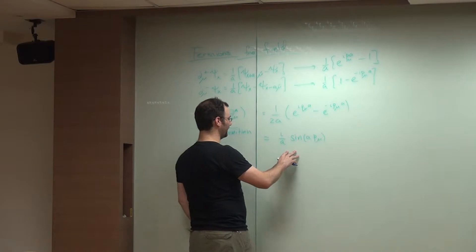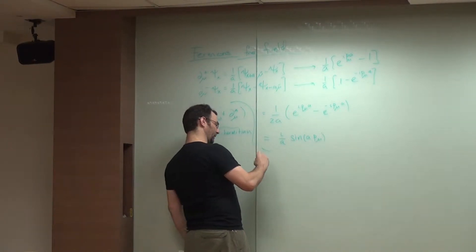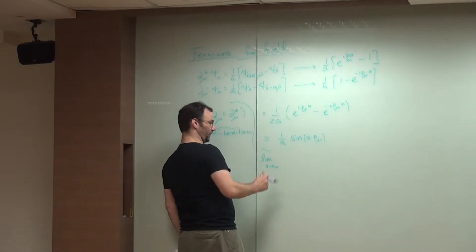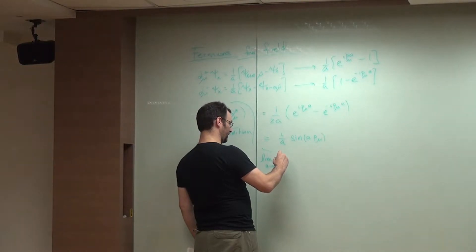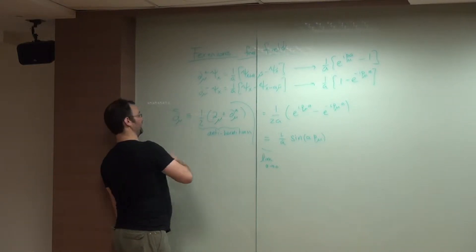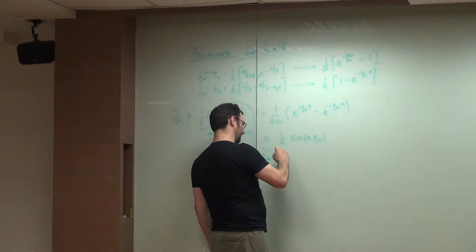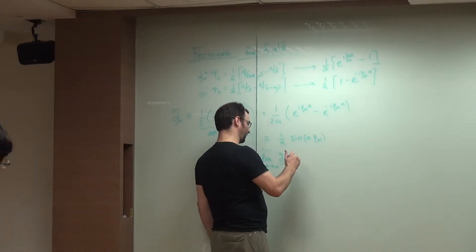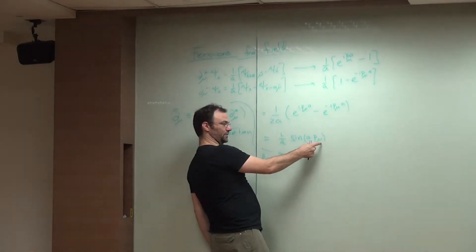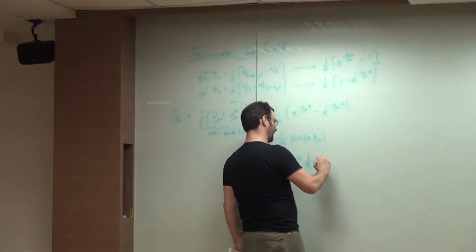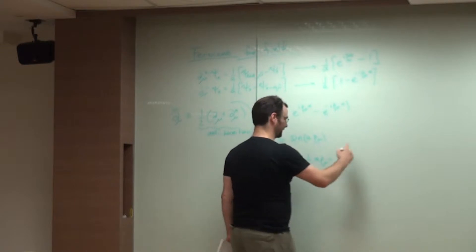So then, if we say what is the behavior of this derivative near the continuum limit, we can consider the limit. Again, a goes to zero. And we see this gets exactly what we expect. I'll call it d mu tilde. The limit of this operator gets us to, as a is small, you just get from the leading term of the sine expansion, it's just the coefficient. So you get i over a times a d mu, which is i d mu. It's exactly what you want.